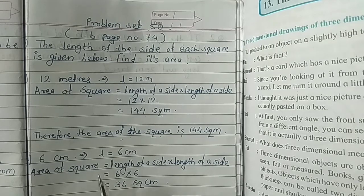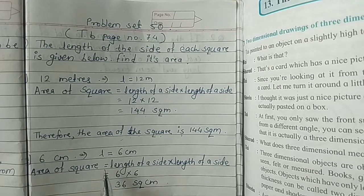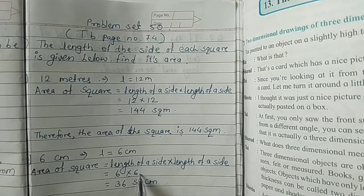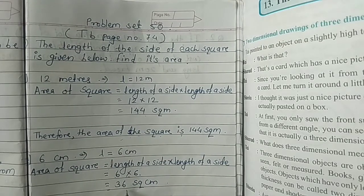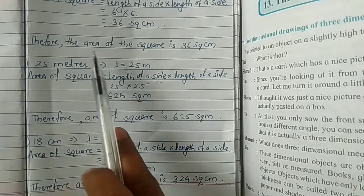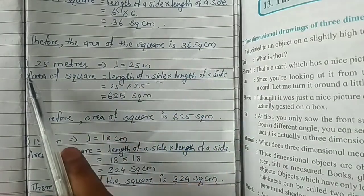Next example: length is 6 centimeters, so we write length is equal to 6 centimeters. Area of the square is equal to length of a side multiplied by length of a side. Putting this length in the formula: 6 multiplied by 6 gives 36 square centimeters. Therefore, the area of the square is 36 square centimeters.